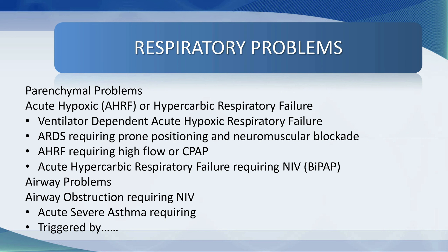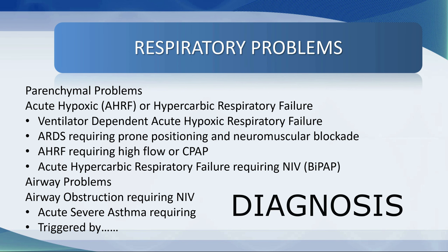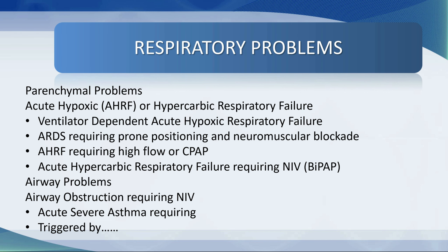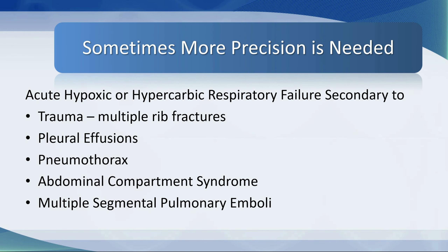The airway problems may be airway obstruction requiring non-invasive ventilation — for example, acute severe asthma requiring high flow, bronchodilators, corticosteroids, etc., that may be triggered by something or other. Try to come up with a problem, the diagnosis, then the intervention and the etiology. Sometimes more precision is needed. The patient may have acute hypoxic or hypercarbic respiratory failure secondary to trauma with multiple rib fractures, pleural effusions, pneumothorax, abdominal compartment syndrome, or multiple segmental pulmonary emboli.